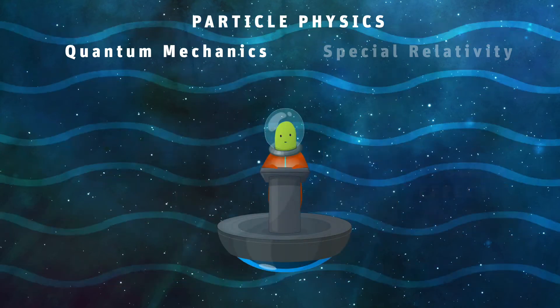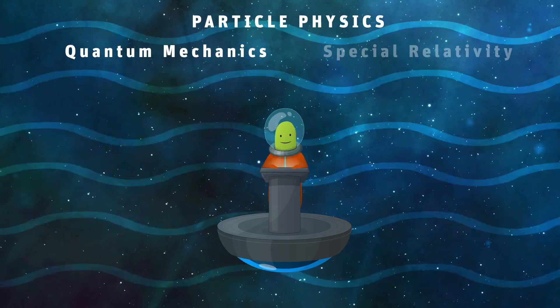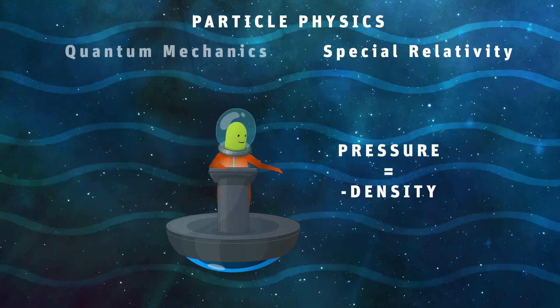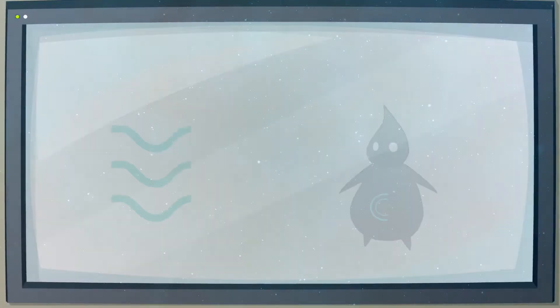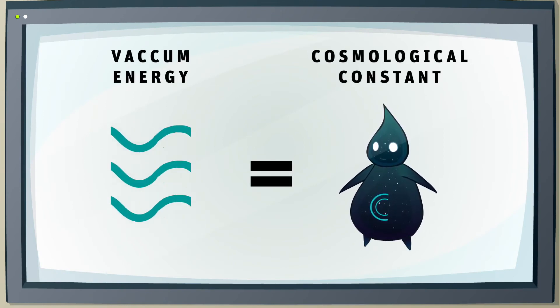Something similar happens for the entire universe. It is full of vacuum energy. Then, special relativity demands that its pressure equals its density. So vacuum energy is like the cosmological constant.